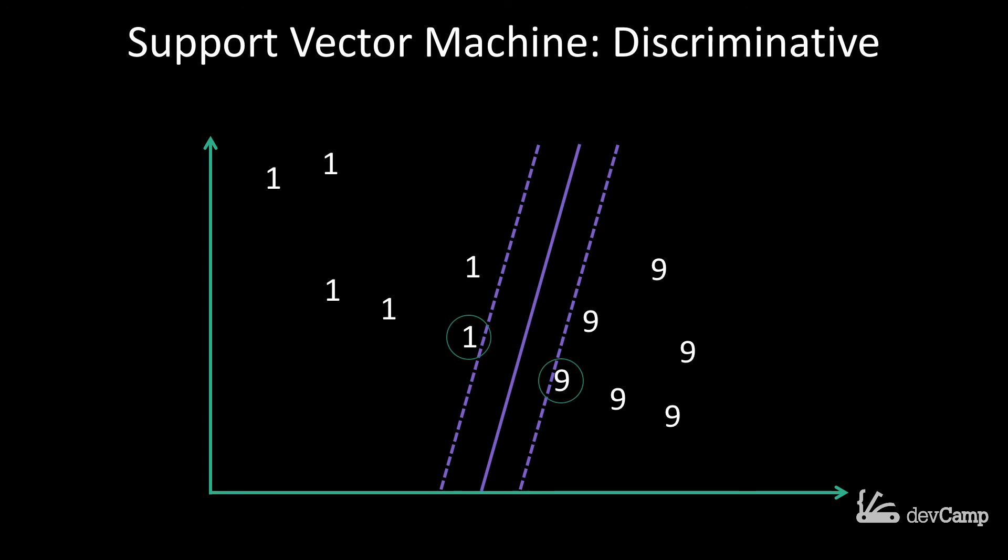But it's all based on where it falls in relation to the graph and where it falls in relation to these boundaries that have been set up. Those are the key differences between discriminative algorithms and generative ones.